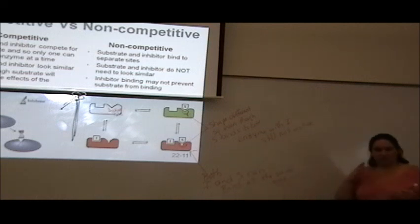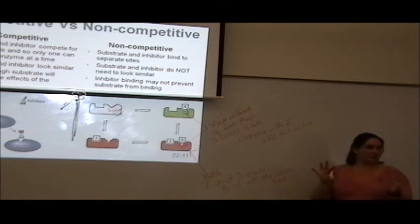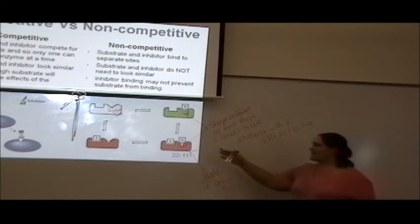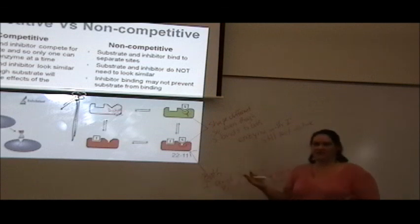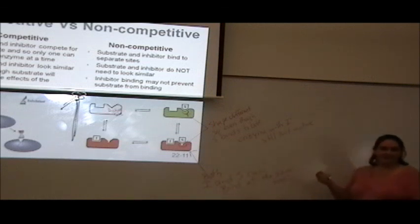So even though S binds to both, the enzyme with the inhibitor is still not active. It's still been inhibited. So competitive, straightforward. Whatever gets to the site first controls what's happening. The substrate gets there, it's active. If the inhibitor gets there, it's inactive. The same thing happens here. Except here, the inhibitor doesn't necessarily prevent the substrate from occupying that active site. But the inhibitor does always turn the enzyme off. If it didn't turn the enzyme off, it wouldn't be inhibition.